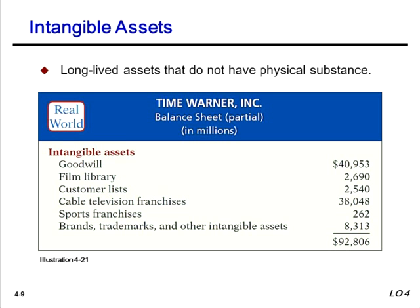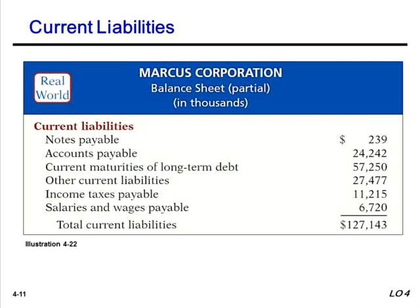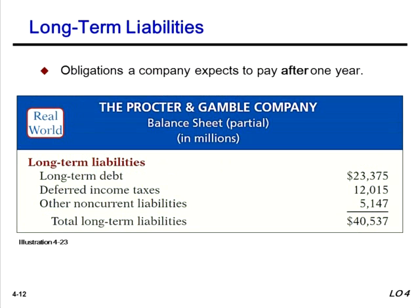We also have a listing of intangible assets, which will be covered later in the semester. Under current liabilities, as noted, they are obligations that have to be paid within the year, with short-term notes payable listed first, followed by other current liabilities. If you see the word 'payable,' that tells you it's a liability because money is owed. Under long-term liabilities we have long-term debt, deferred income taxes — which we won't cover in this class — and other non-current liabilities.